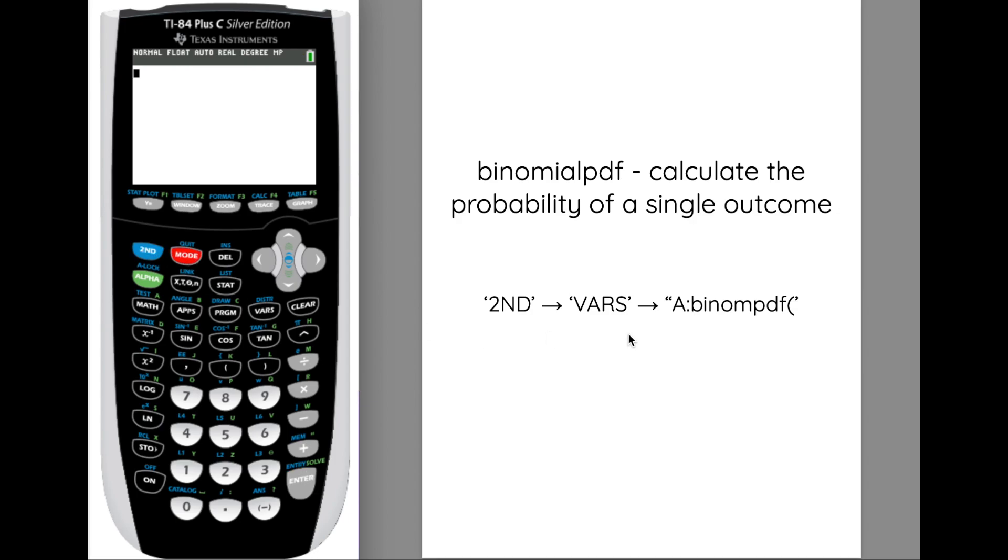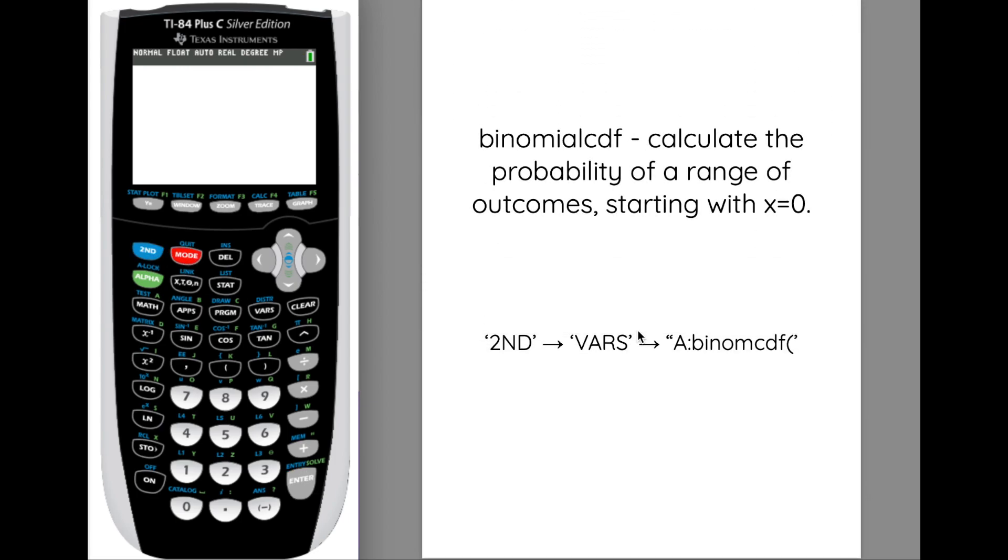The other one is when you have a range of values, and this one is called binomial CDF, the C being cumulative, so it's adding up the probabilities for you. So the way we find that is the same way: second, VARS. We scroll all the way down to option B, and that is the binomial CDF. And when we plug the values in for binomial CDF,